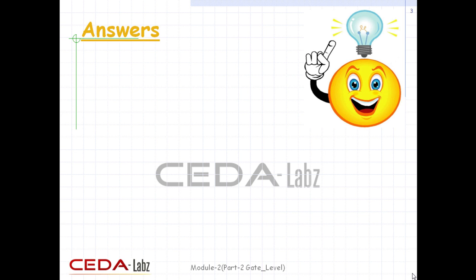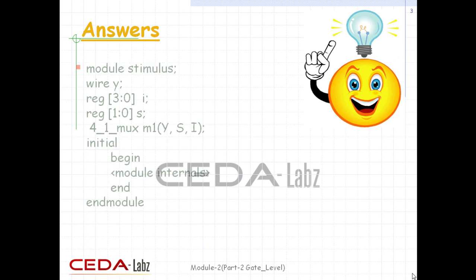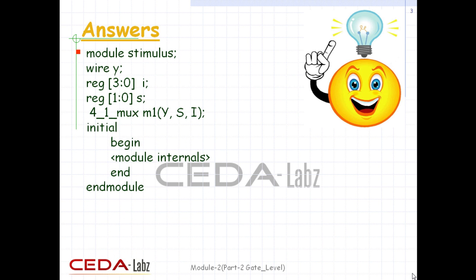Another question was to declare a top-level module, stimulus, for the last defined module definition — that is, the 4-to-1 multiplexer — and we have to connect the ports by ordered list. Output is declared as wire and inputs as register. We instantiate the lower-level module as four_one_mux, followed by instance name, within brackets which contain the port list in the same order as the module definition.